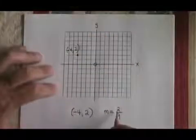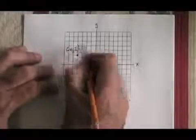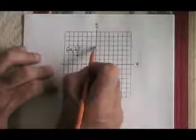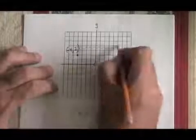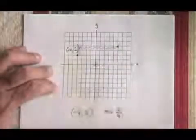Then I do a rise of 2, which brings me up here, and a run of 9, which brings me all the way over here. I have found the second point.